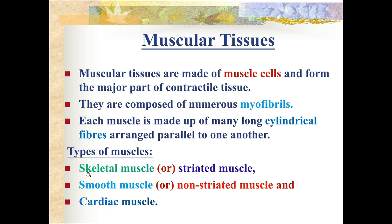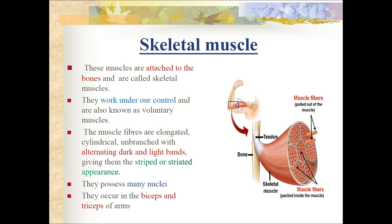There are three types of muscles: skeletal muscle (also called striated muscle), smooth muscle (also called non-striated muscle), and cardiac muscle. Skeletal muscles are attached to bones, work under our control, and are known as voluntary muscles. The muscle fibers are elongated, cylindrical, unbranched with alternating dark and light bands giving them a striped or striated appearance, and they possess many nuclei. They occur in muscles like the bicep and tricep of our arm.